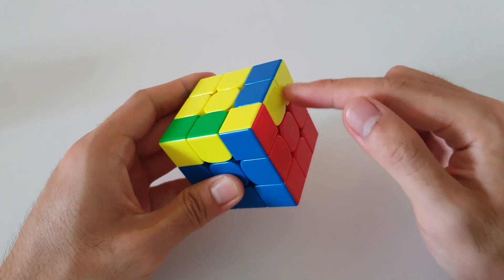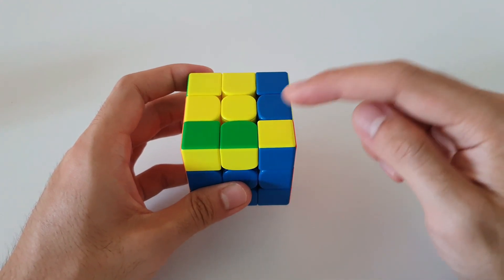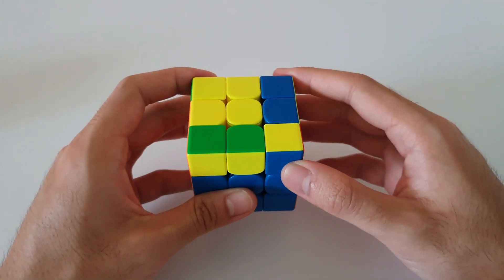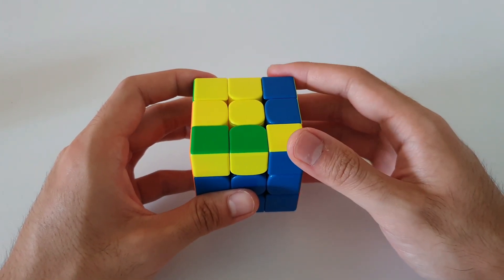So when you get this case, you want to hold it so that one of the 2x1 bars is facing you, and the other 2x1 bar is facing the right side. Otherwise, you can recognize it as having the single corner over here on the front right corner. Either way of remembering it is fine. This will be how you want to hold it before you do the algorithm.